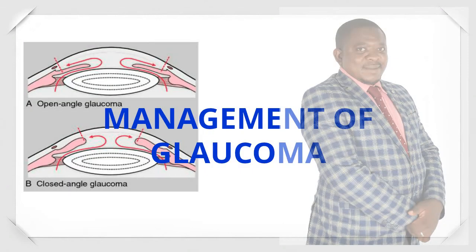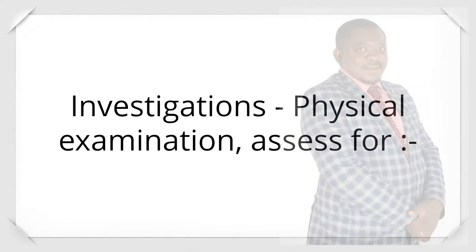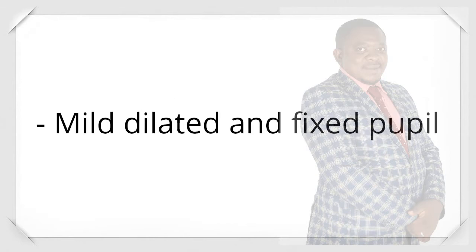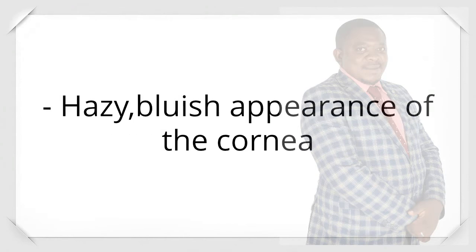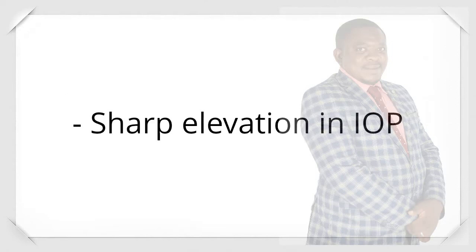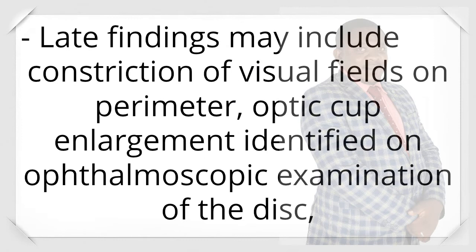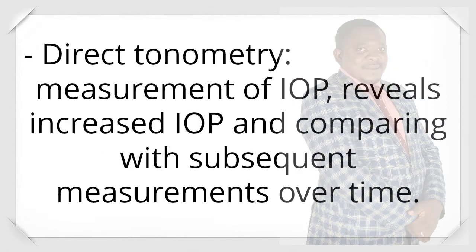Management of glaucoma — investigations and physical examination: assess for mild dilated and fixed pupil, hazy bluish appearance of the cornea, and sharp elevation in IOP. Late findings may include constriction of visual fields on perimetry and optic cup enlargement identified on ophthalmoscopic examination of the disc. Direct tonometry — measurement of IOP — reveals increased IOP compared with subsequent measurements over time.